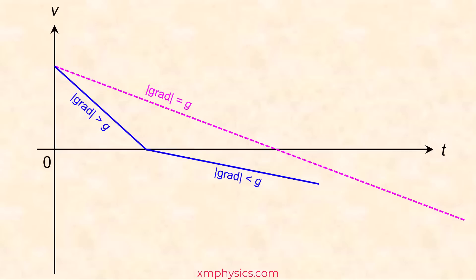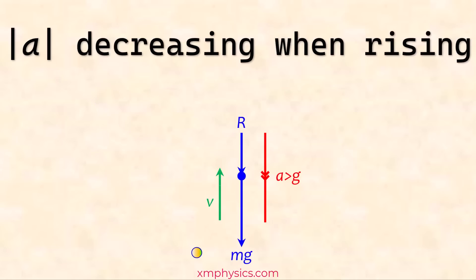Wrong. Because it shouldn't be straight. Because on the way up, as V decreases continuously, the air resistance also decreases continuously. So the net force decreases continuously and so does the acceleration.